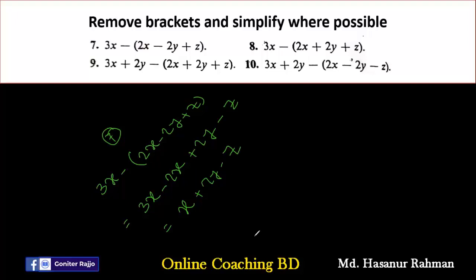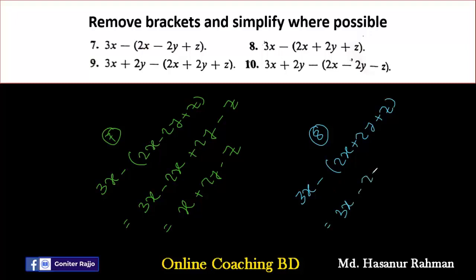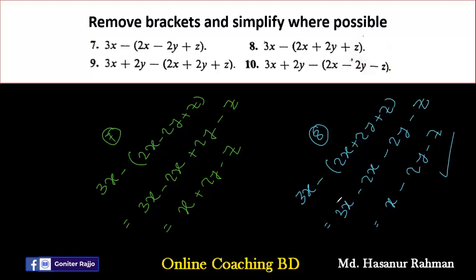Now number 8. Number 8 says: 3x minus (2x plus 2y plus z). Then: 3x, minus into plus 2y gives minus 2y, minus into plus z gives minus z. Simplifying: 3x minus 2x equals x, so x minus 2y minus z is the answer of number 8.